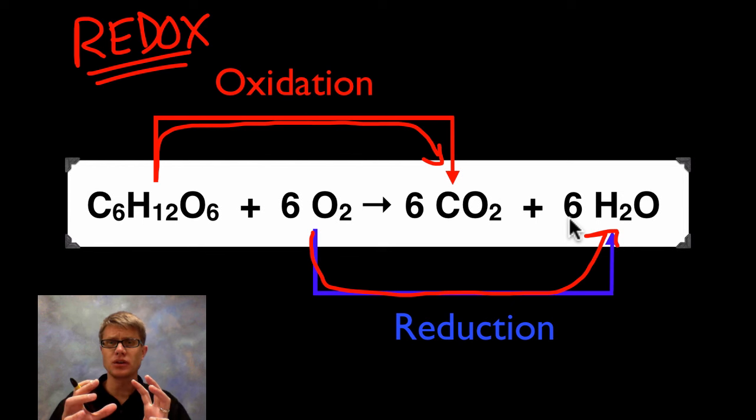And there are high energy electrons in our food. And then as they fall down to low energy bonded with oxygen we release a lot of that energy. In this case in the form of ATP.